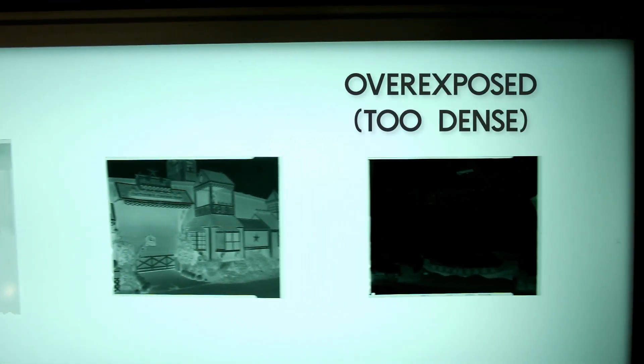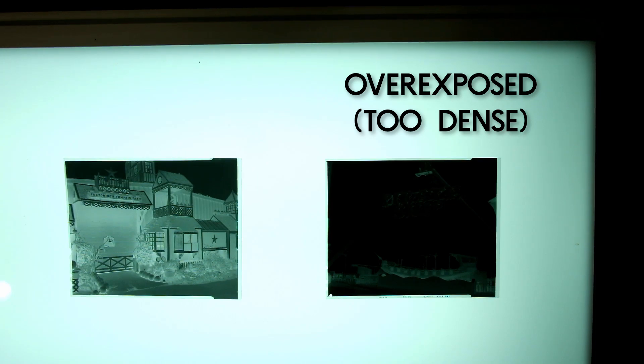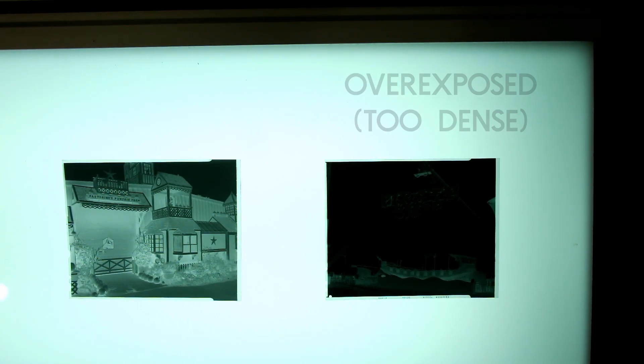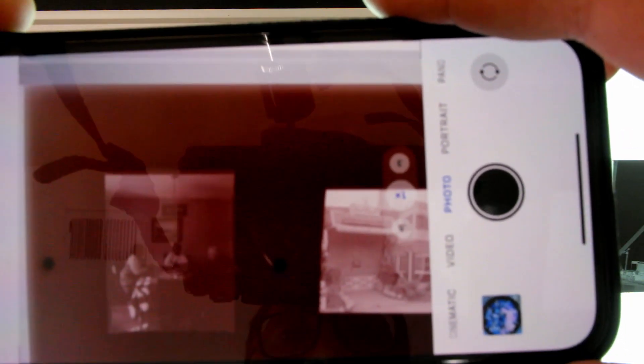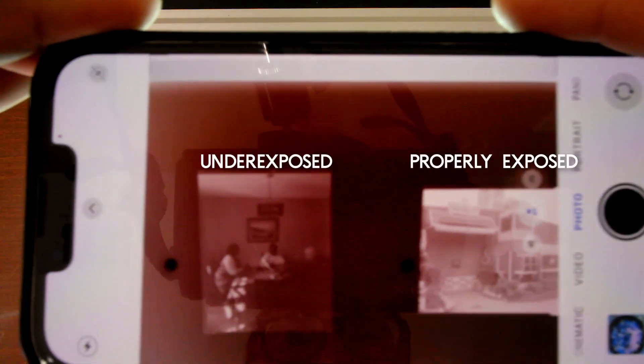Over here on the right is an overexposed negative. We call that a dense negative, and I really roasted this one where I let way too much light into the camera. Now that's kind of hard to understand looking at the negative, so here's the inversion setting on my phone. Let's look at these again.